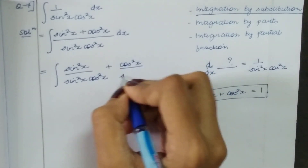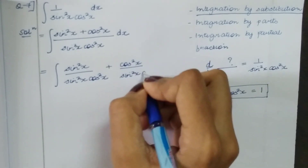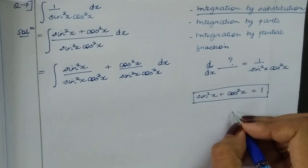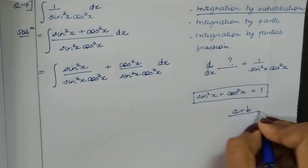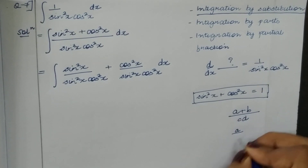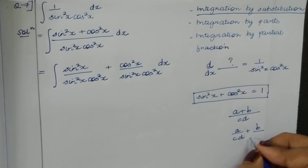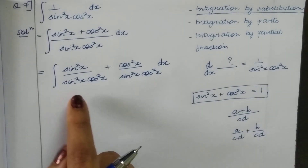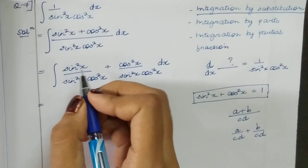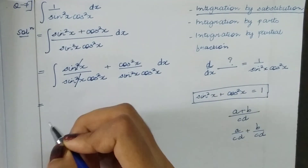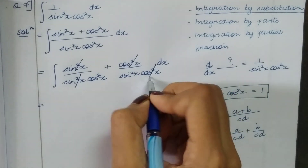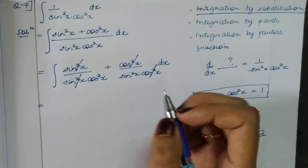We split the fraction: a plus b divided by cd equals a over cd plus b over cd. So we separate this. The sin square x in the numerator and denominator cancel, and the cos square x terms cancel as well.